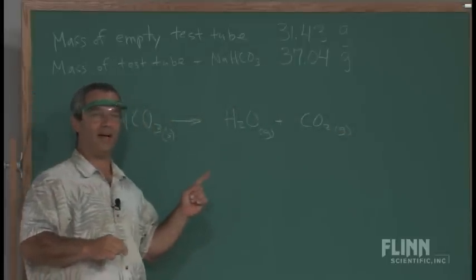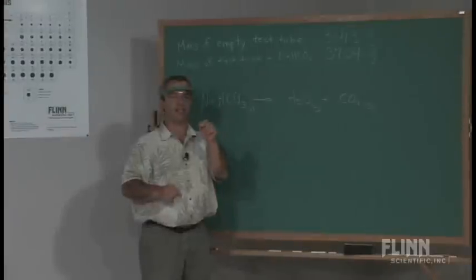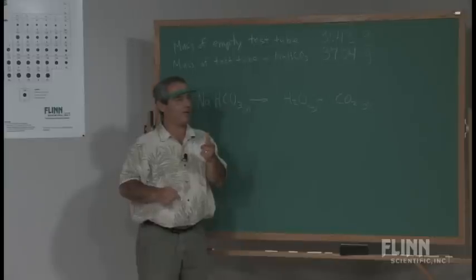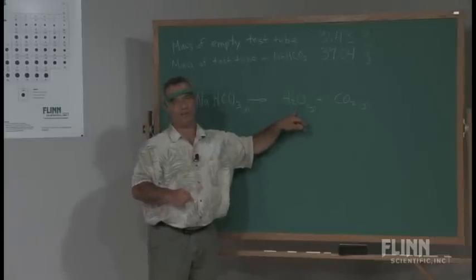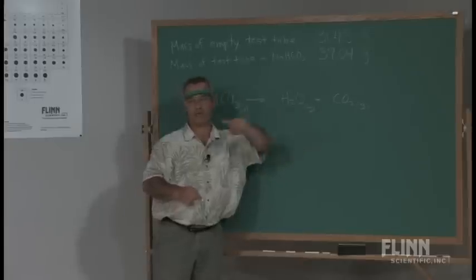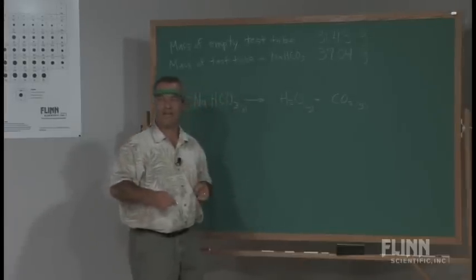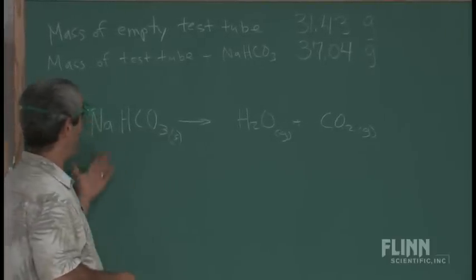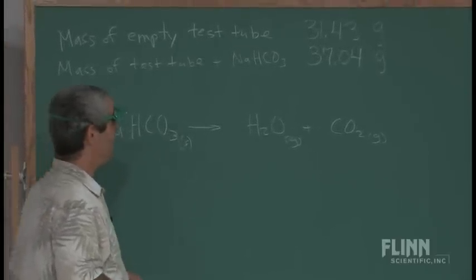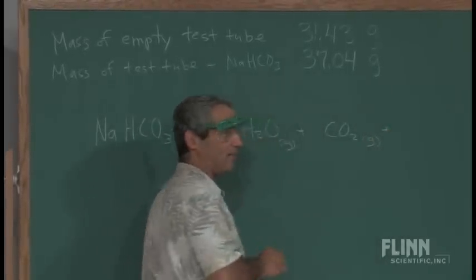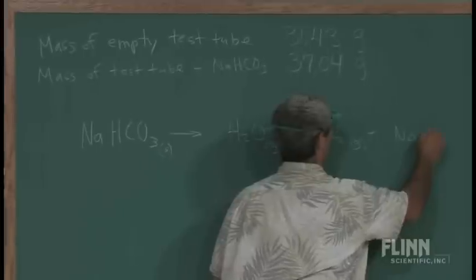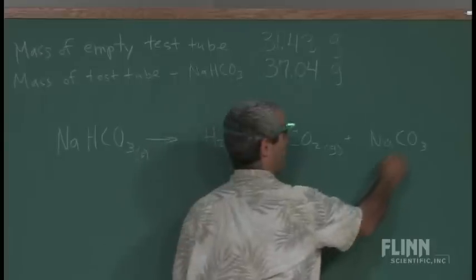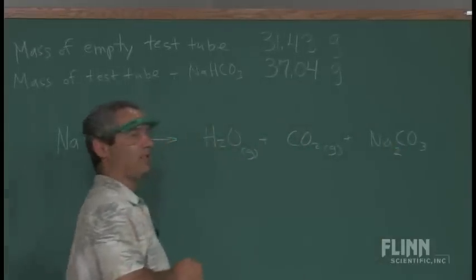When I first developed this lab, I had the students hold a lit splint by the mouth of it, and the splint would go out, but you could argue that it might be the water vapor putting out the splint. That wouldn't be definitive for carbon dioxide. So that's why I switched it to be that little paintbrush with the universal indicator. And then I have to kind of fill them in on what's left over because there's a couple possibilities. But it turns out what you're left with is sodium carbonate. And they have to recall that the correct formula for sodium carbonate is Na2CO3 to balance charges.